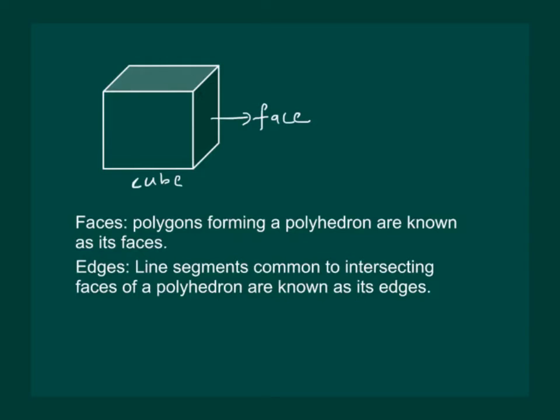Next, we define edges. Line segments common to the intersecting faces of a polyhedron are known as its edges. That means the two faces are meeting at a line. This line is called edge and likewise we have many edges where the faces are meeting.